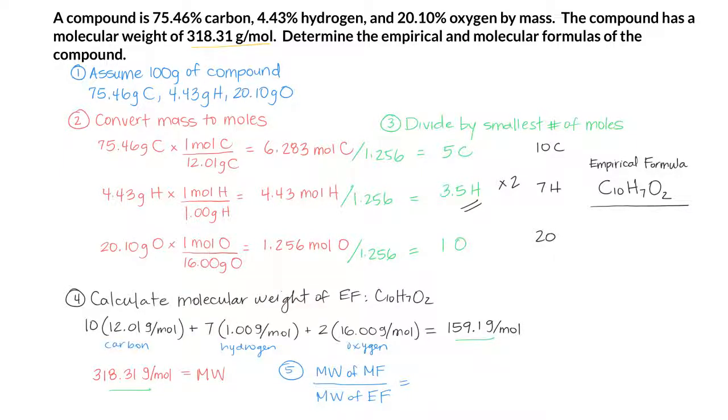Let's take the molecular weight given in the problem – we know that's the weight of the formula, 318.31 grams per mole – and divide by the molecular weight of the empirical formula, which we calculated as 159.1 grams per mole – and we get 2. This tells us that our molecular formula is 2 times the empirical formula. So our molecular formula is C20H14O4.